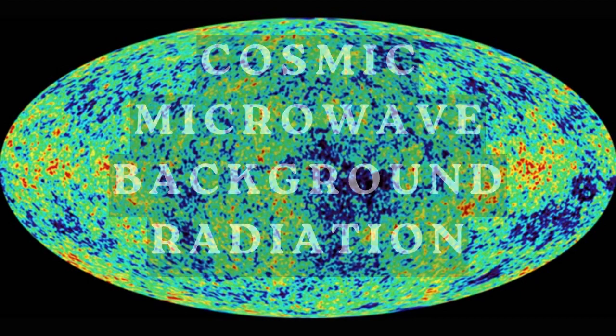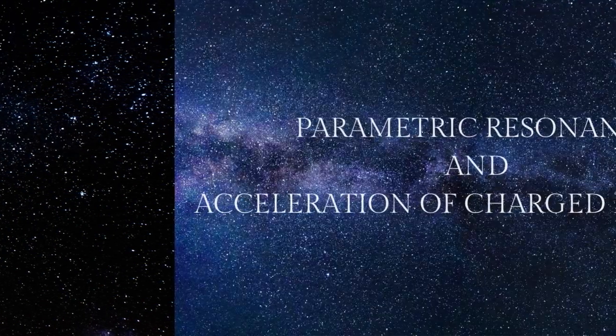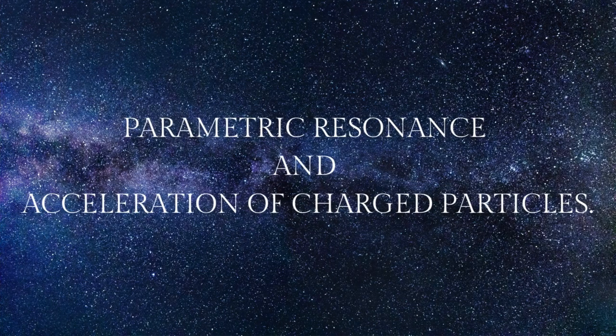How can gravity produce light? There are two main ways that gravity can produce light: through parametric resonance and through the acceleration of charged particles.